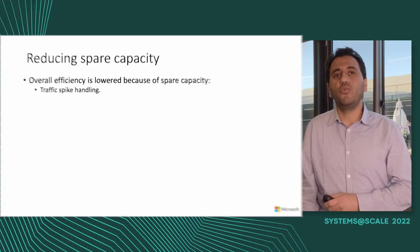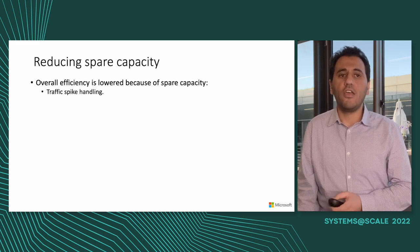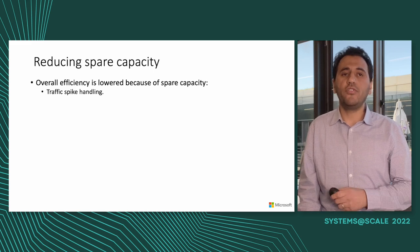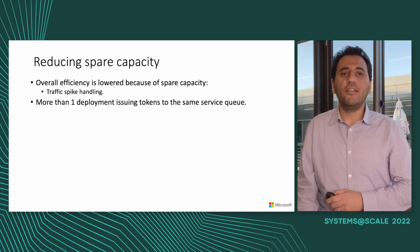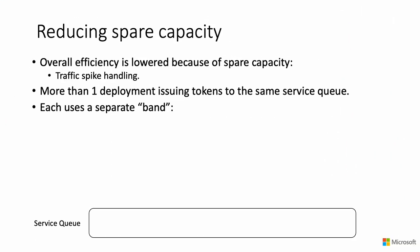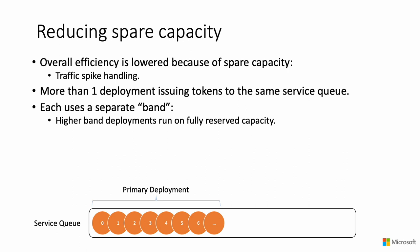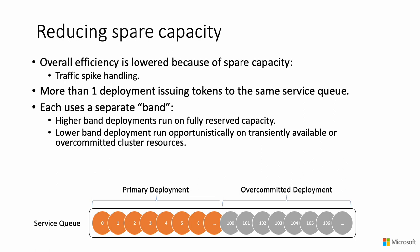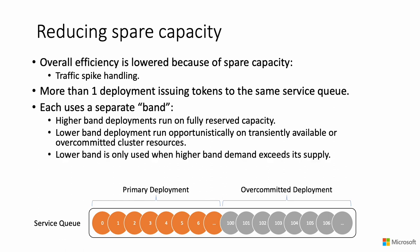Moving to solve our next problem of decreasing spare unused capacity, we introduced priority multi-banding. Multi-banding means more than one deployment can issue tokens to the same service queue, each using a separate band. Higher-band deployments run on fully reserved capacity, while lower-band deployments can run on opportunistic, transiently available, or over-committed cluster resources. Lower bands are only used when higher bands are not available, or when demand for high-priority tokens exceeds supply. This enabled scenarios like no-latency scaling, and with priority multi-banding we were able to reduce spare capacity by 50 percent.